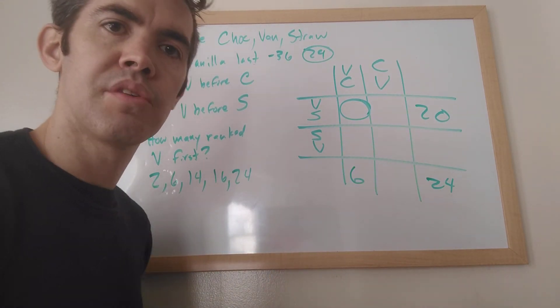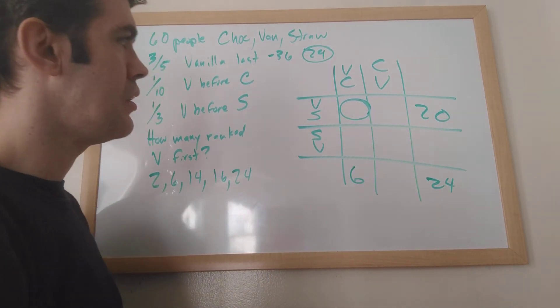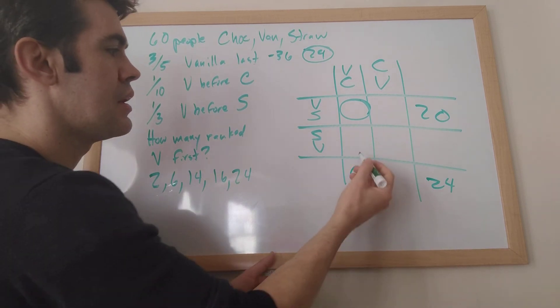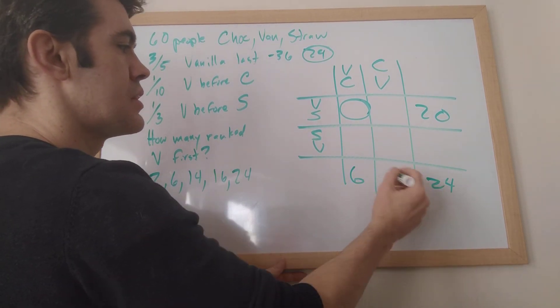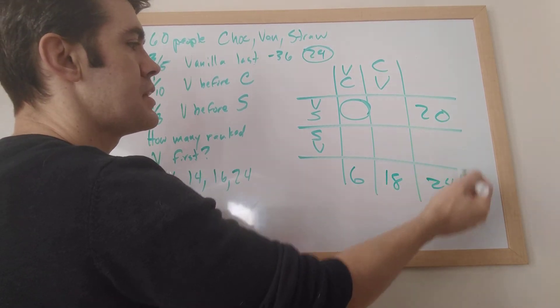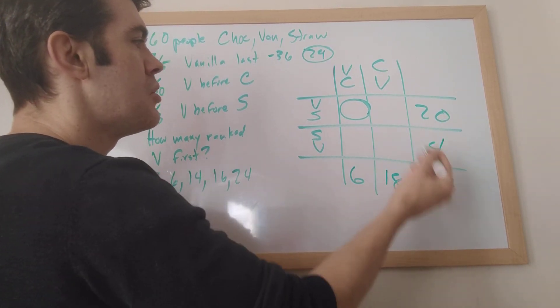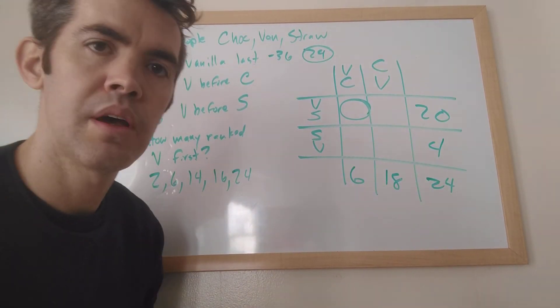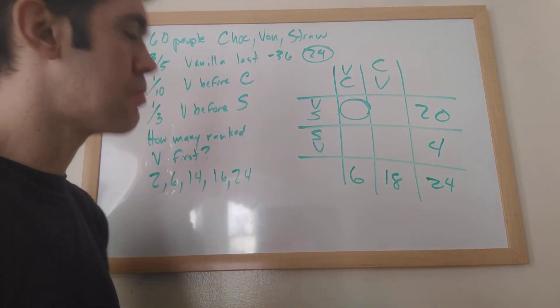Now if you've done a lot of these overlapping sets tables, you know already you can't really solve it. And here's why. So this plus this has to equal this. So this must be 18. And this plus this equals this. So this must be 4. But I can't get this because I don't know what's going on. I can't fill in any more of these boxes.